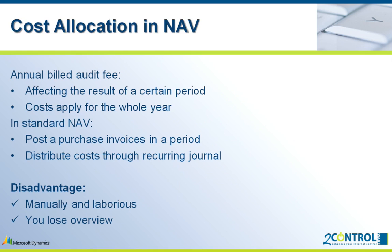You probably recognize this situation. Your annual audit fee is affecting the result of a certain period, while these costs actually apply for the whole year. In standard NAV you will post a purchase invoice in a period and then distribute these costs through a recurring journal. The disadvantage is that you have to do this manually without having a clear overview.